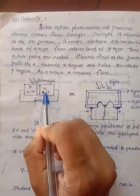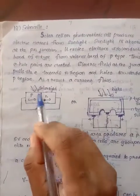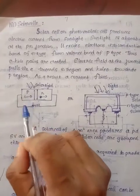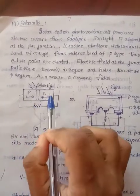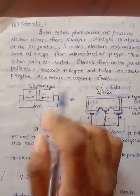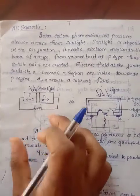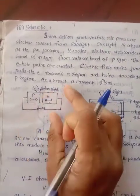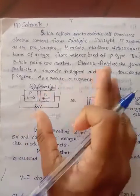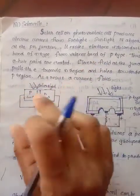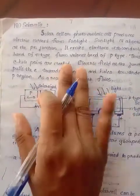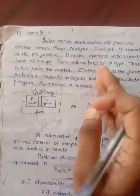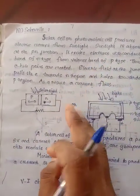This is a PN junction diode. The PN junction material is in the depletion region, and we use a resistor. This is a current measure. The electron-hole pairs are generated. These electron-hole pairs will move towards the corresponding terminals. We connect the electrons to the positive terminal and the holes to the negative terminal.